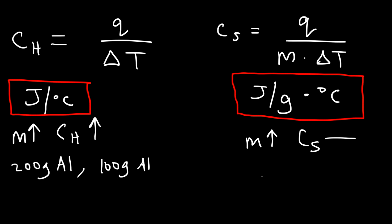The specific heat capacity is the same whether you have 200 grams of aluminum or 100 grams of aluminum. It depends on the identity of the substance, so the specific heat capacity will be different for water as opposed to aluminum. But heat capacity not only changes based on the identity of the substance, but also based on how much of the substance you have.